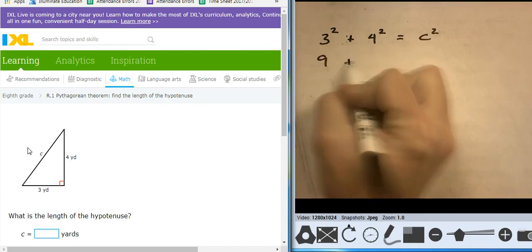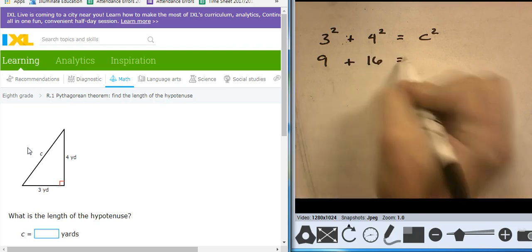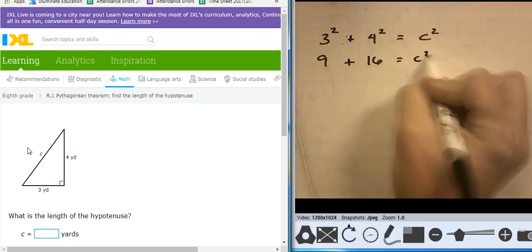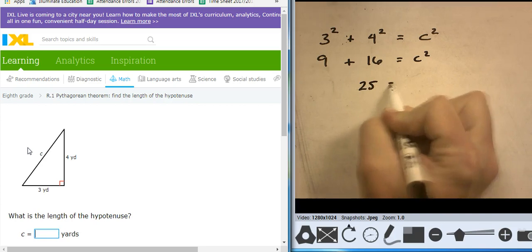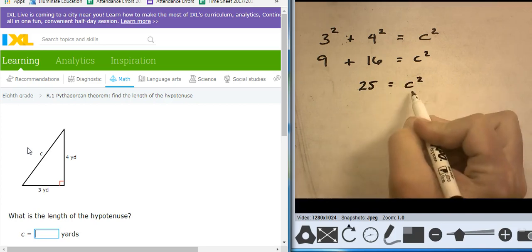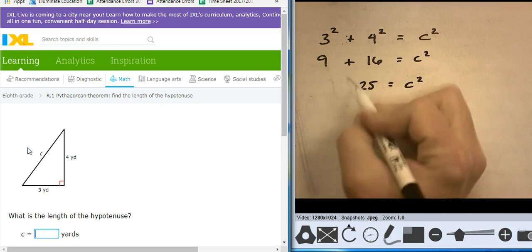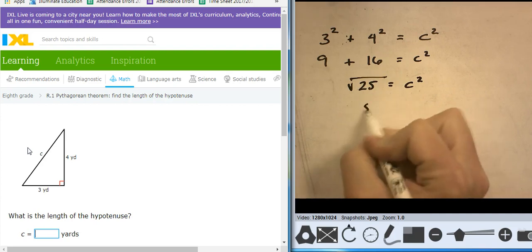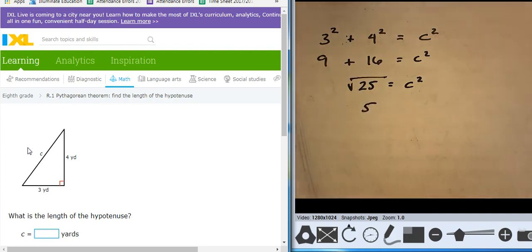So this is 9 plus 16 equals the hypotenuse squared. So 25 equals the hypotenuse squared. So what number squared is 25? Well, I could use the square root, and that's going to tell me 5. So the length of that missing side is 5.